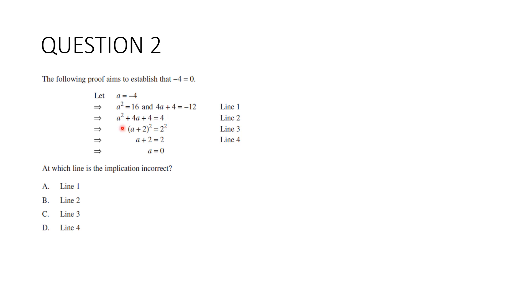Now we're adding both together. a² + 4a + 4 equals 16 - 12, which is 4. Correct. The left-hand side can be factorized into (a + 2)², and the right-hand side equals 2². So line 3 is correct. And here's the problem. When we do the square root, we need to consider that it could be plus or minus 2. So the problem is at line 4.